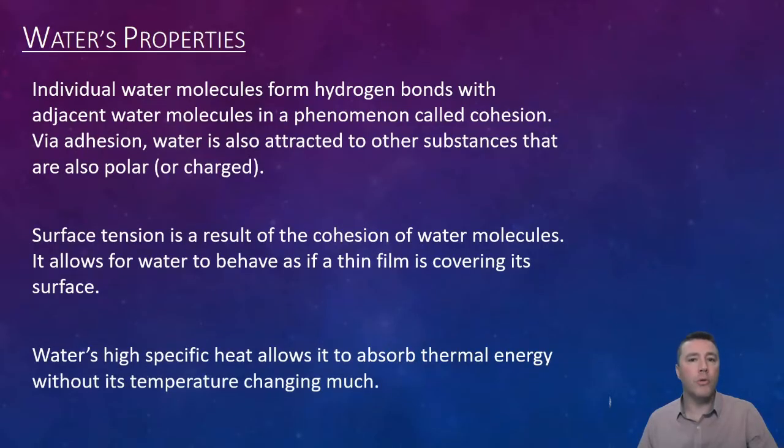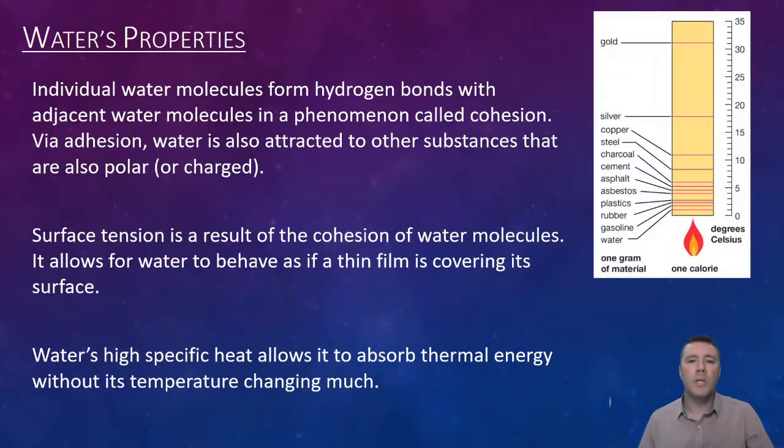Water doesn't gain or lose thermal energy easily. Specific heat is a measure of how much energy is required to heat up a mass of a substance by a given temperature, typically one degree Celsius. Let's take a look at this example. In the first column, we see a list of a variety of substances of equal mass, one gram, each being subjected to one unit of energy, in this case a single calorie. By how much does one gram of gold increase in temperature with one calorie? 31 degrees Celsius. Silver increases by 18 degrees Celsius and cement by just over 5 degrees. But water, on the other hand, only increases by a single degree Celsius.